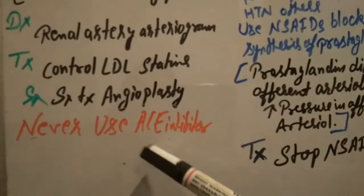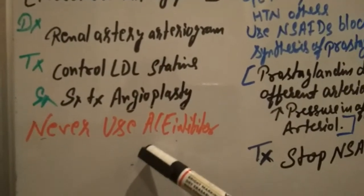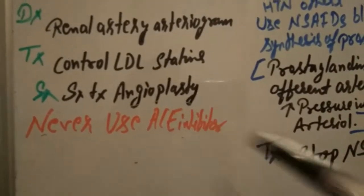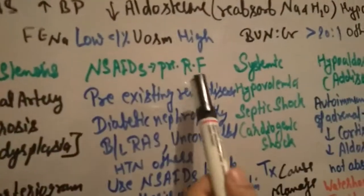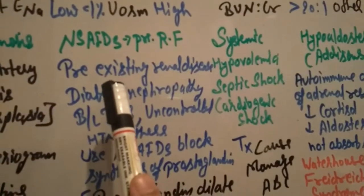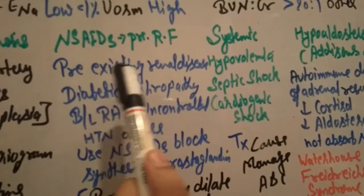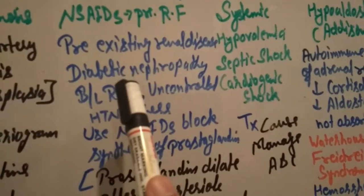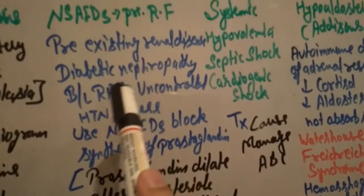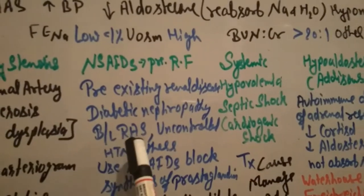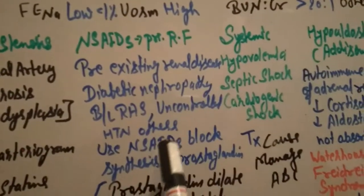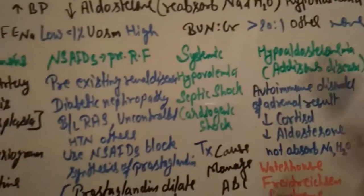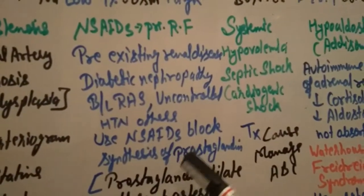Then NSAIDs. NSAIDs cause pre-renal failure how? Because of pre-existing renal disease like diabetic nephropathy, patient already suffering from renal disease like diabetic nephropathy, bilateral renal artery stenosis, uncontrolled hypertension. If we give in such situation NSAIDs...